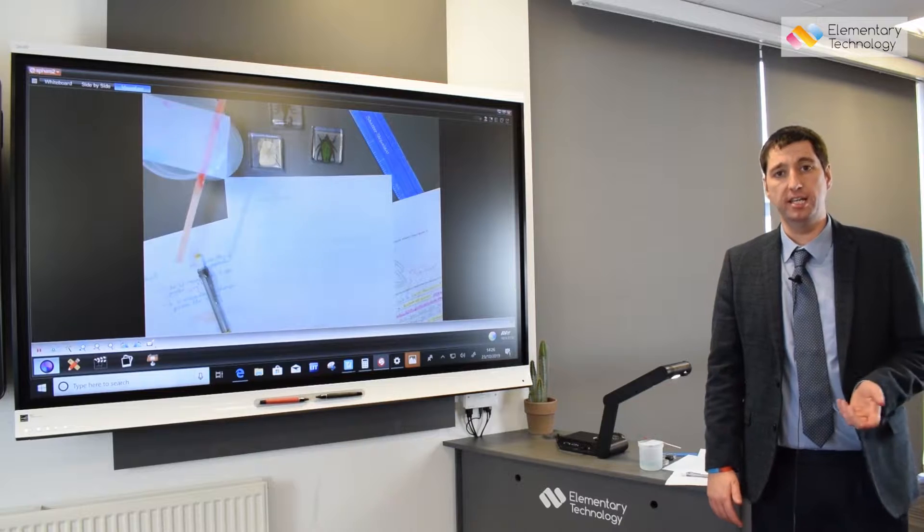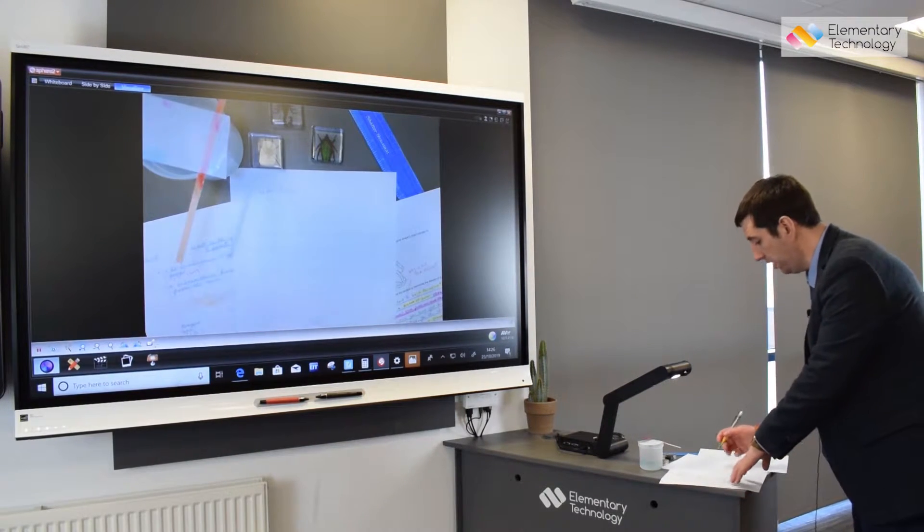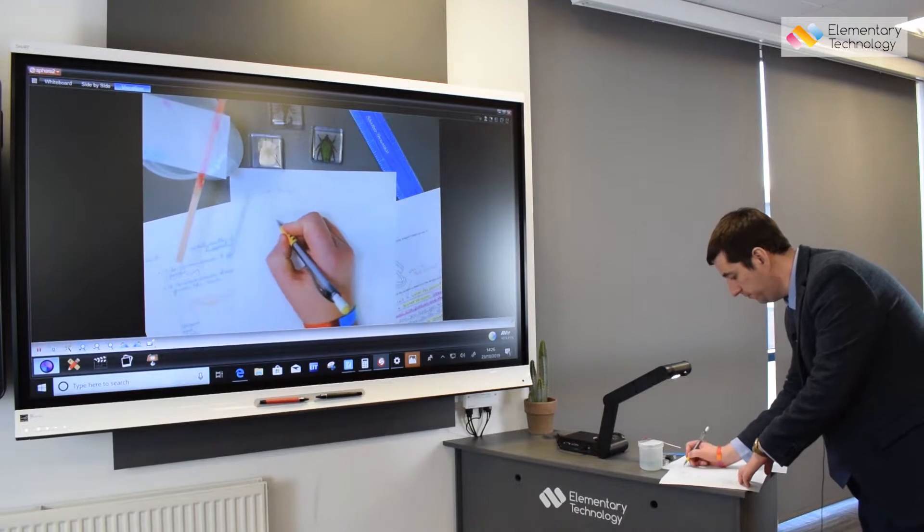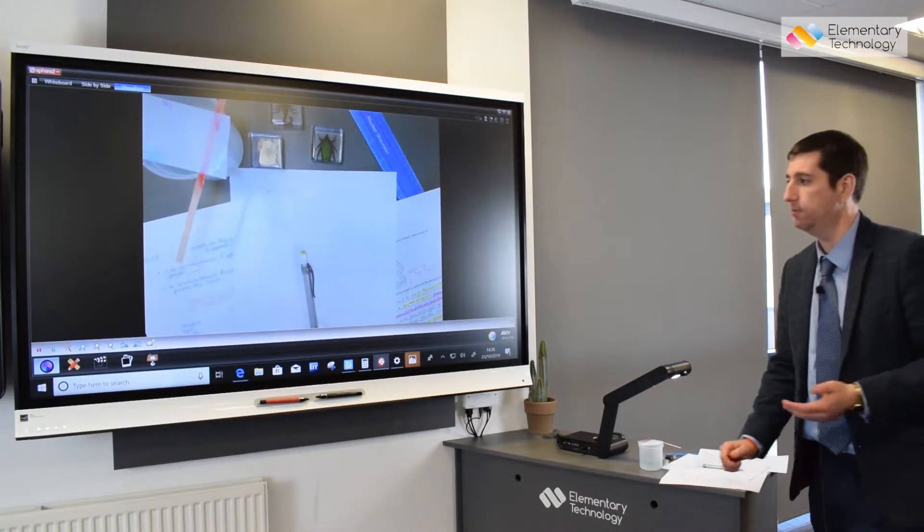The first technique is modelling. One of the things I can do under the visualiser is letter formation. As you can see, I can draw the letters, but I can also record that as well.